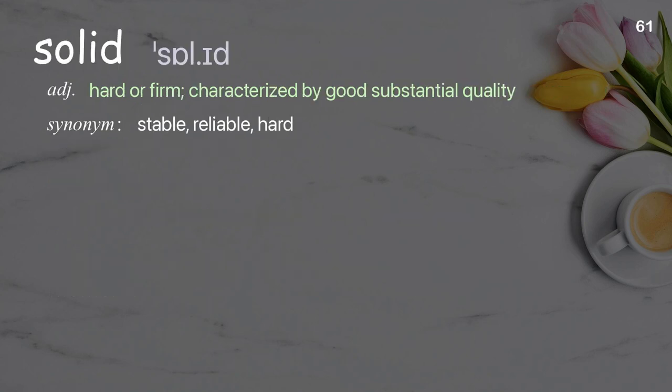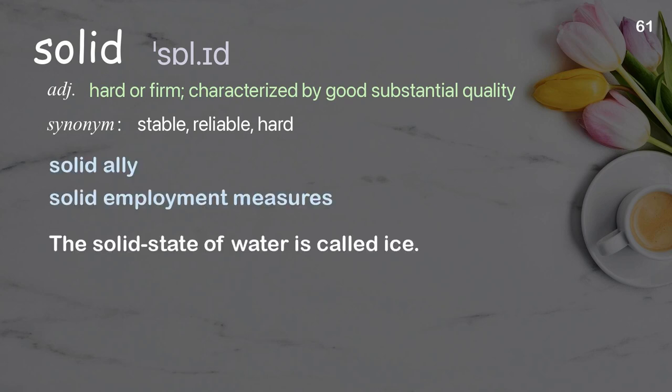Solid: hard or firm; characterized by good substantial quality. Examples: Solid employment measures. The solid state of water is called ice.